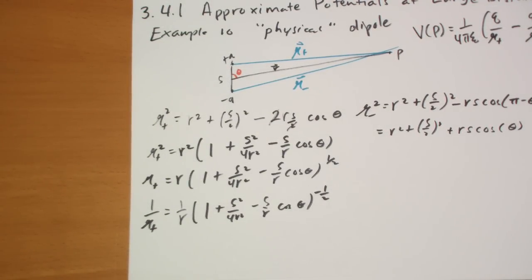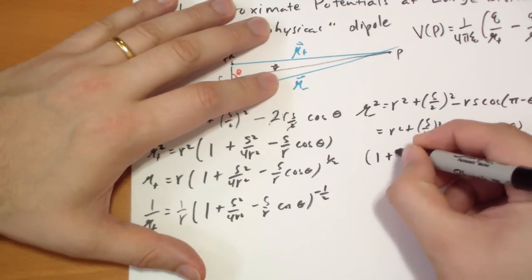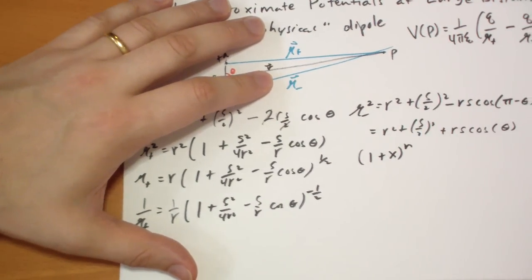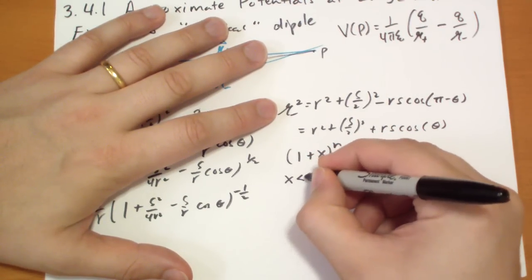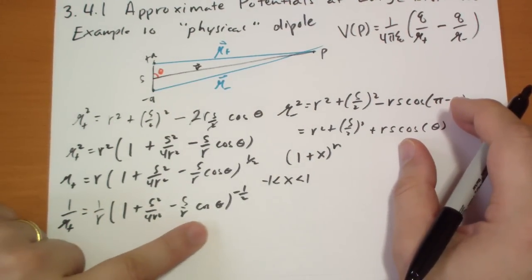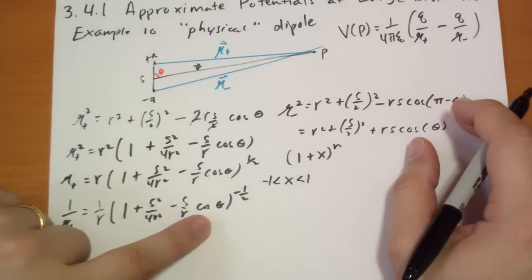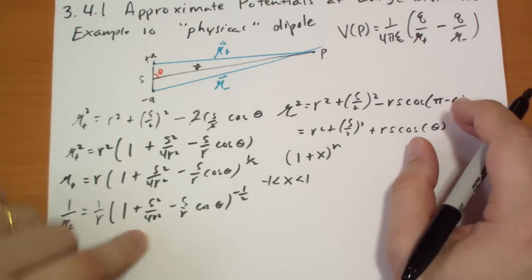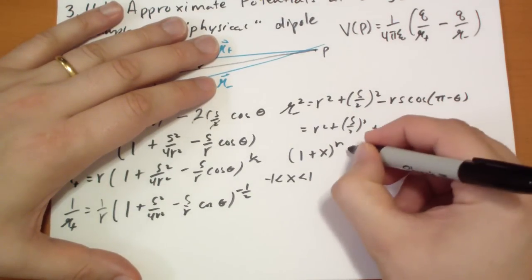And the inversion of that, so 1 over R plus, which is from this equation up here, is going to be 1 over R times 1 plus S squared over 4 R squared minus S over R cos theta to the negative one-half. At this point, he uses a polynomial expansion, which, if it's not fresh in your mind from your mathematics course, I'm going to write out for you.